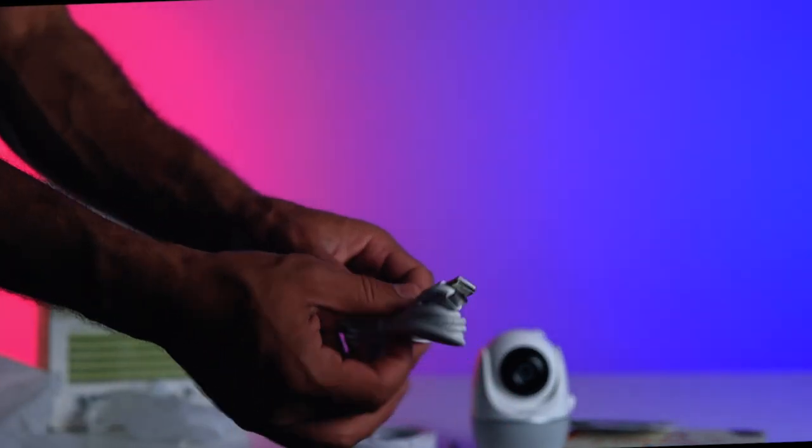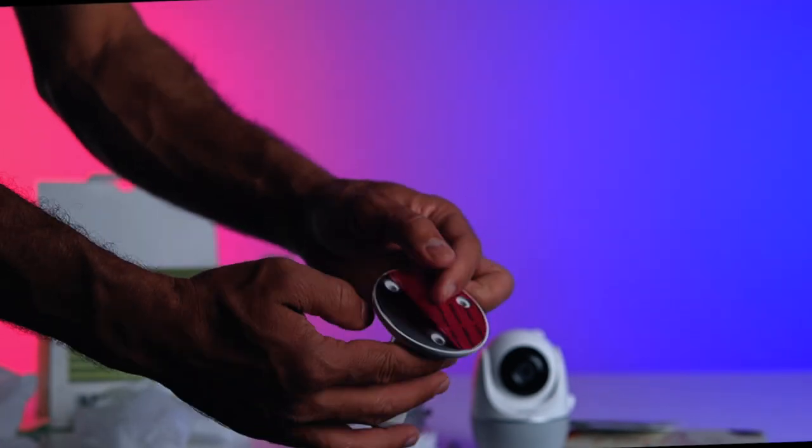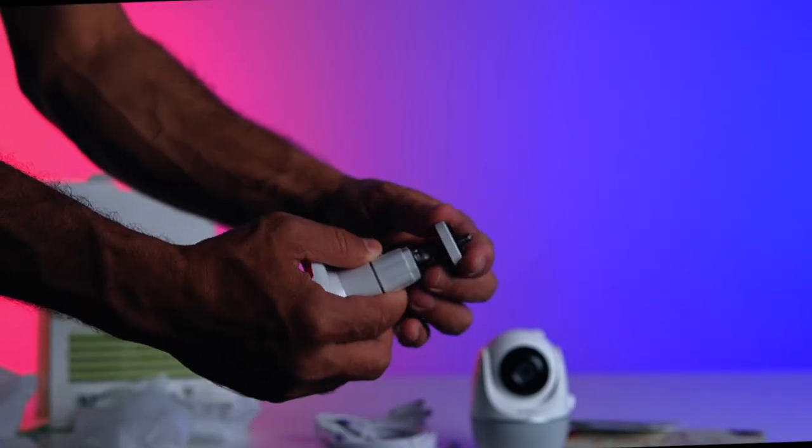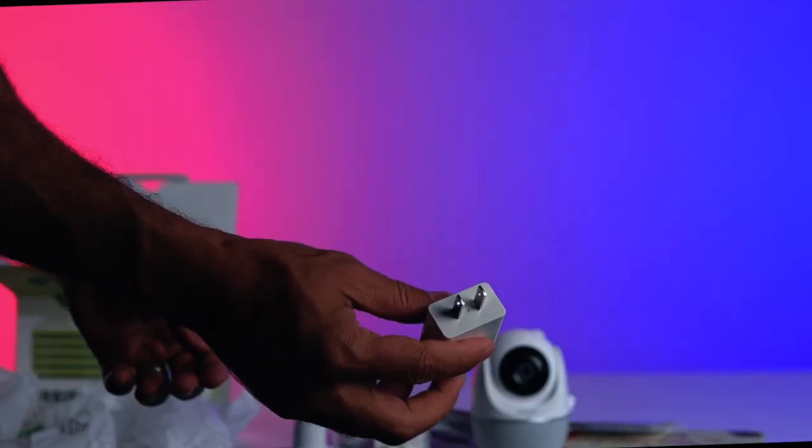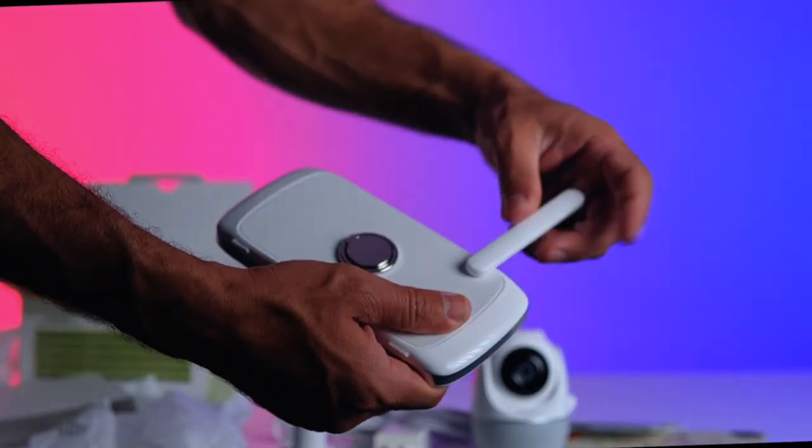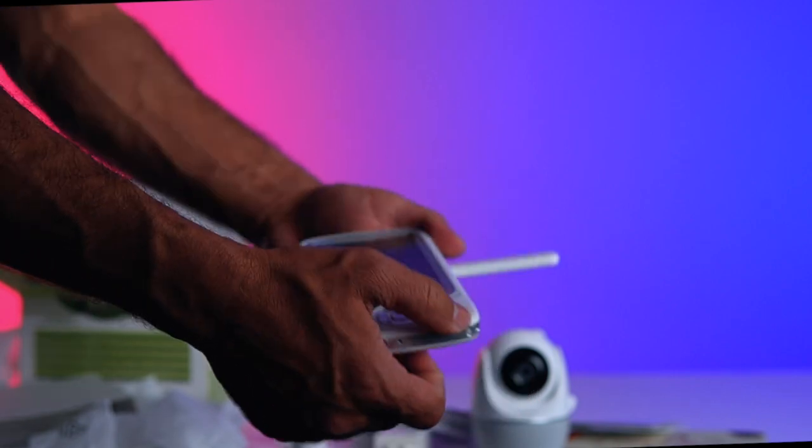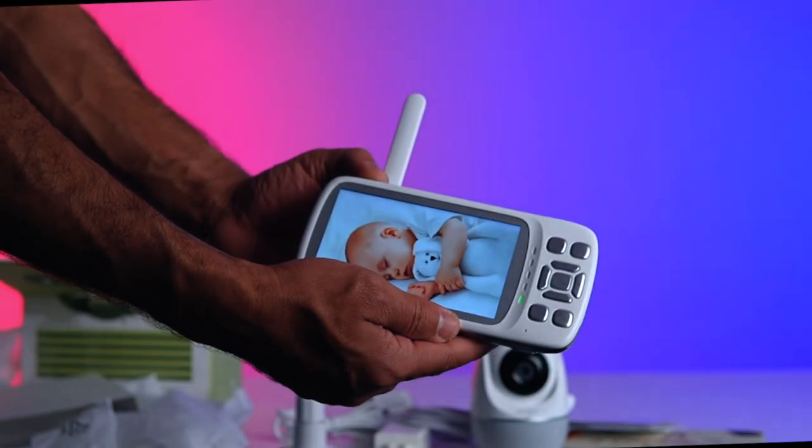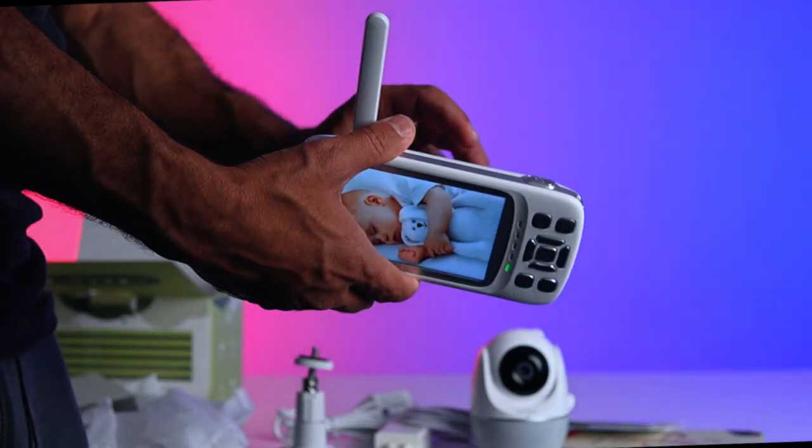Now, let's delve into what makes the Guzgu Long Range Baby Monitor truly stand out. First off, its stable signal connection is an absolute game changer. Gone are the days of worrying about lost connections or Wi-Fi hiccups. This baby monitor ensures a rock-solid connection, even through thick walls thanks to its powerful signal penetration. Plus, with no Wi-Fi required, we can rest easy knowing that our camera feed is secure and private, with no risk of unauthorized access.